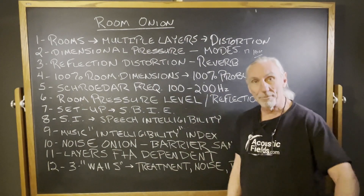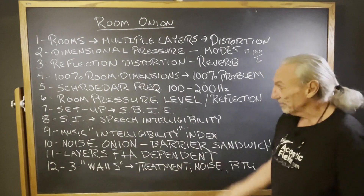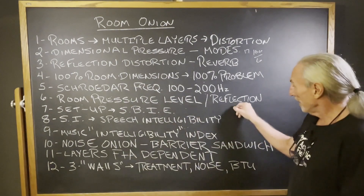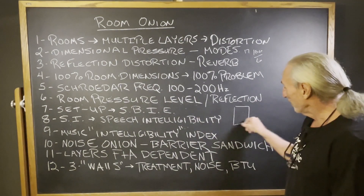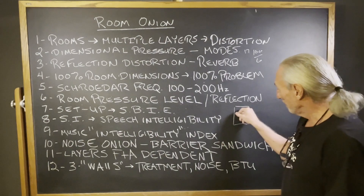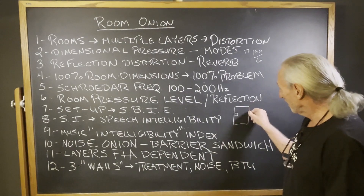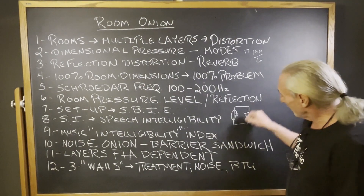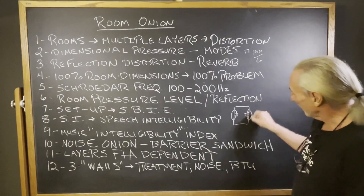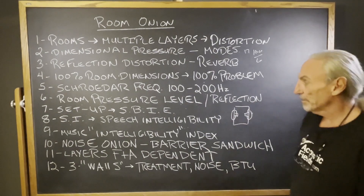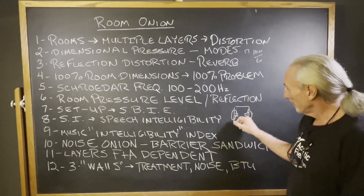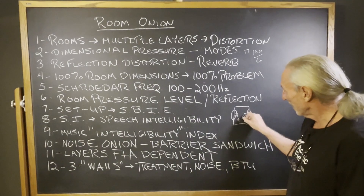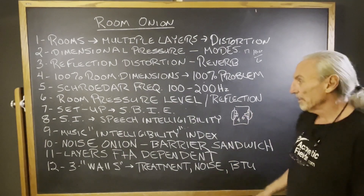Setup — speaker boundary interference effect. Stay away from those boundaries. I see constant room setups with the speaker right next to the wall. This is speaker boundary interference effect. You're too close to the boundary, you're going to create problems. Stay back four to five feet — good start points.